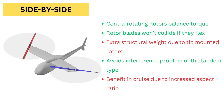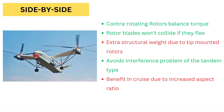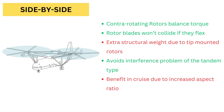The side-by-side helicopter configuration is used for larger helicopters such as the Russian MIL-V-12. This arrangement has extra structural weight because of the tip-mounted rotors. This type avoids the interference problems of the tandem helicopter and may benefit in forward flight from an apparent doubling of the aspect ratio.